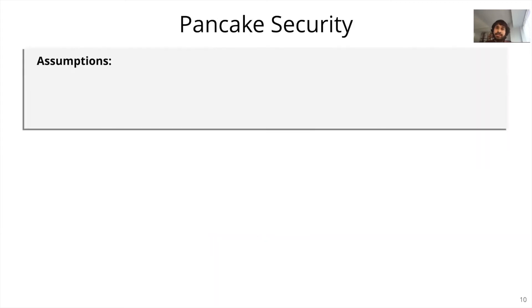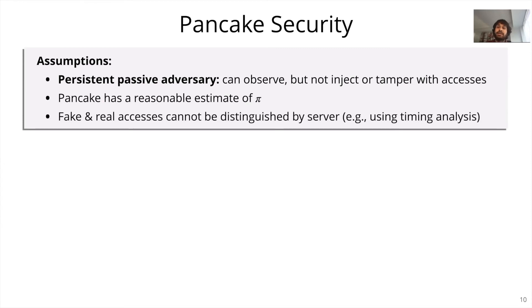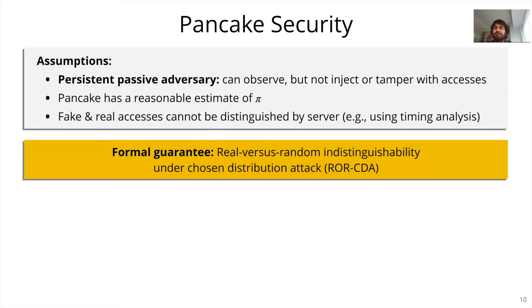We show that this approach allows Pancake to provide formal security guarantees under a certain set of assumptions. First, we assume that the adversary is persistent passive, meaning it can observe all accesses but cannot inject or tamper with them. Second, we assume Pancake has a reasonable estimate of the access distribution pi. Finally, we assume that real and fake accesses are indistinguishable at the cloud storage servers. Under these assumptions, our formal guarantee is referred to as real-versus-random indistinguishability under chosen distribution attack, or RORCDA for short.